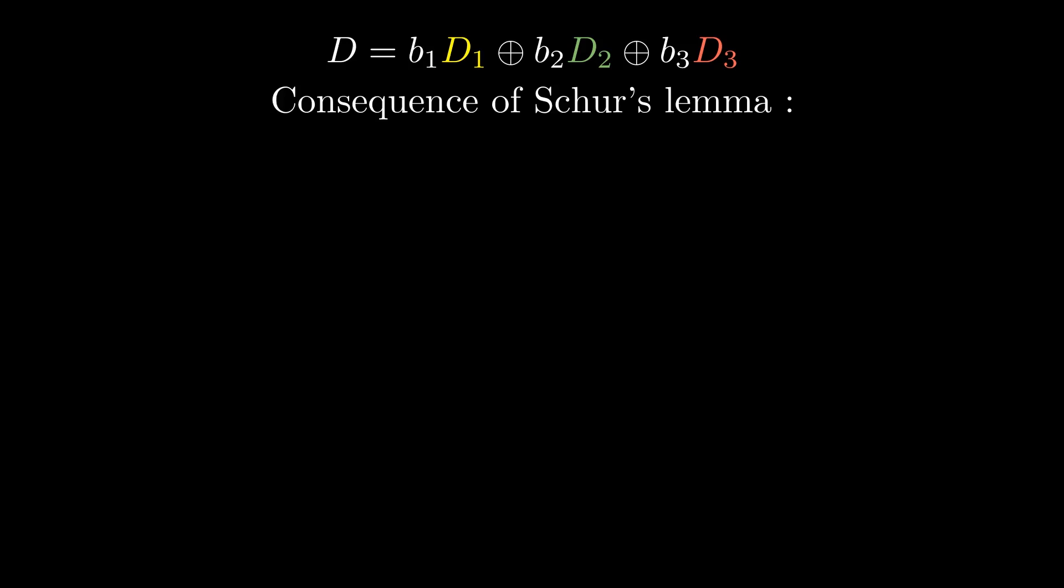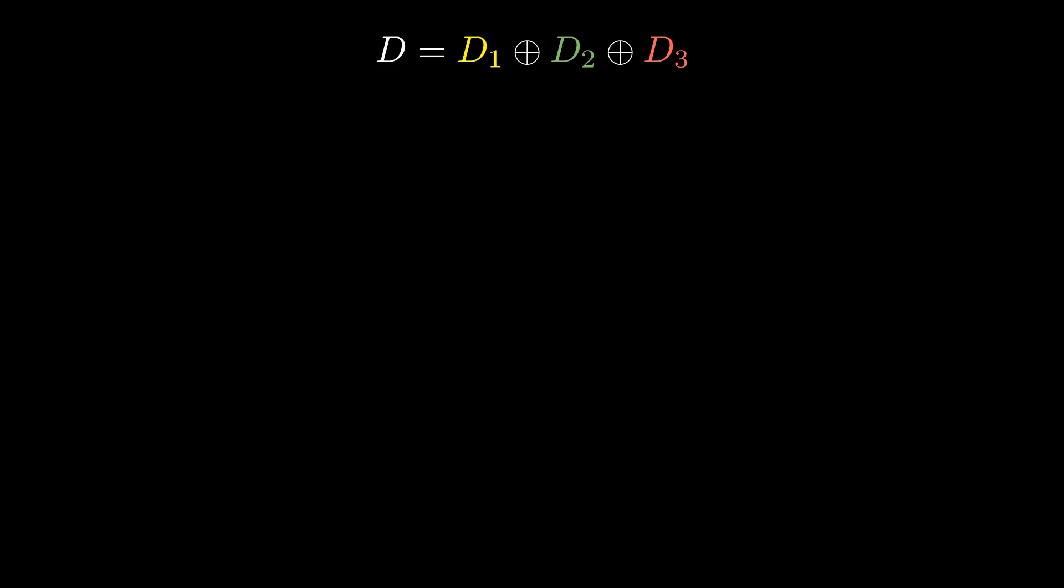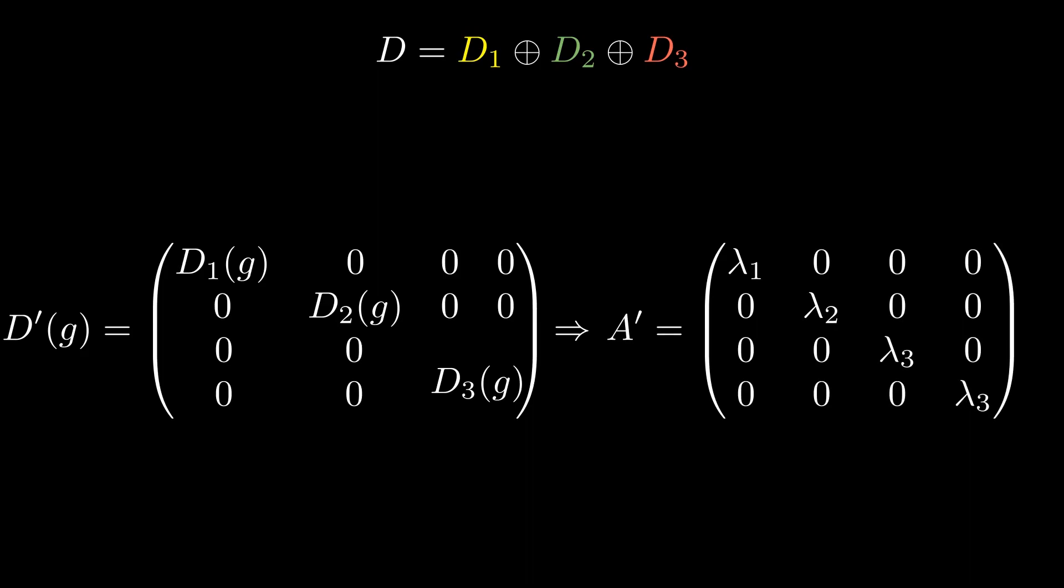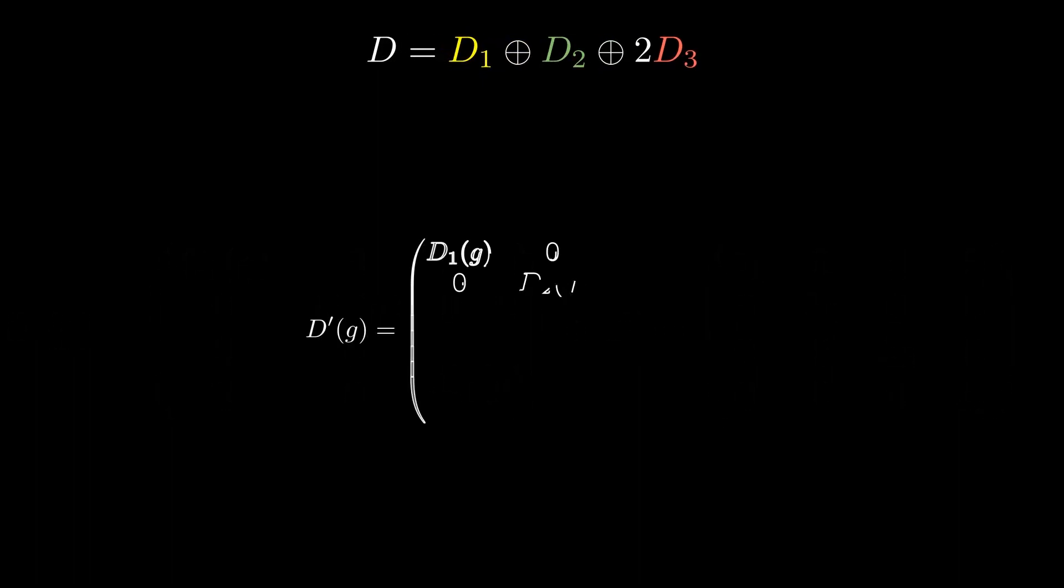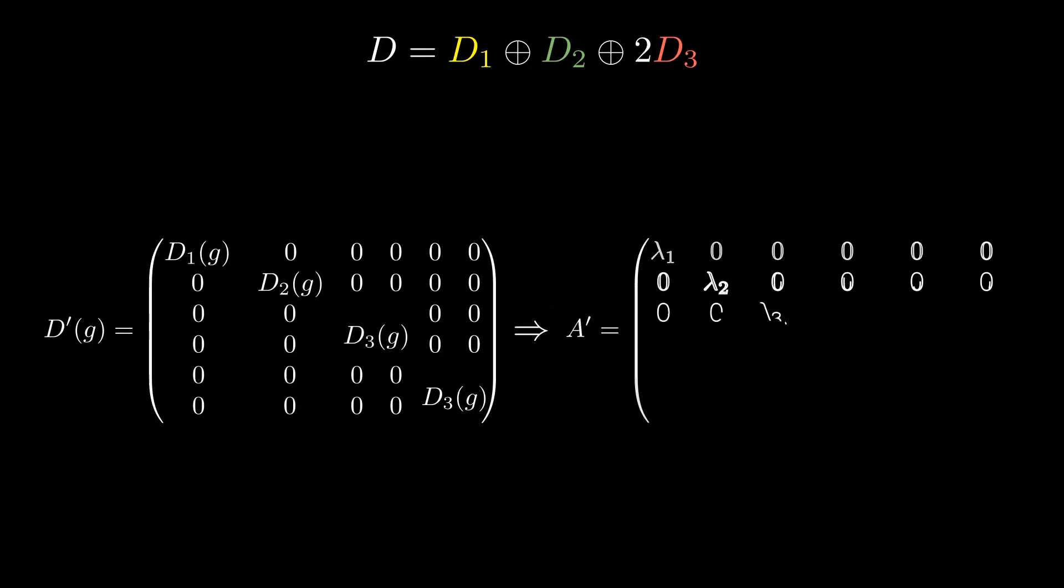This lemma helps to diagonalize a matrix if we know that it commutes with all the representation matrices. First, consider the case where each irreducible representation appears at most one time in the composition as in our previous example. Then, if we choose the basis in which the representation is block diagonal, the matrix A will be diagonal in this basis. So the eigenvectors of A are simply the new basis vectors. Now, in the case where some representation appears more than one time, for example, if the two-dimensional representation D3 appears two times in the decomposition, then the block corresponding to 2D3 will be filled by diagonal 2D blocks.